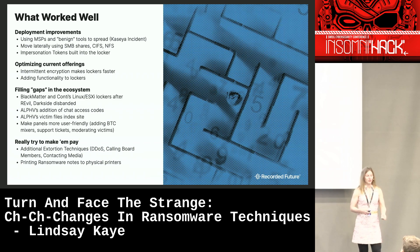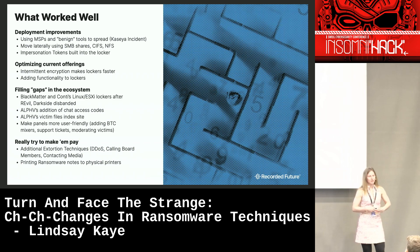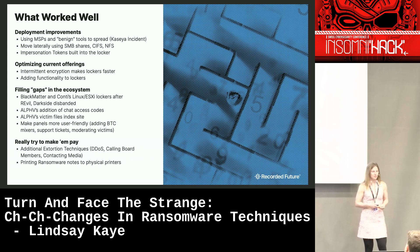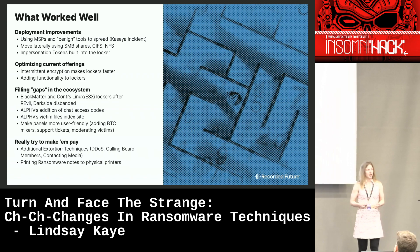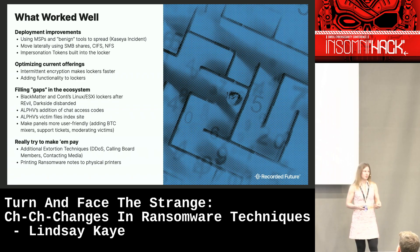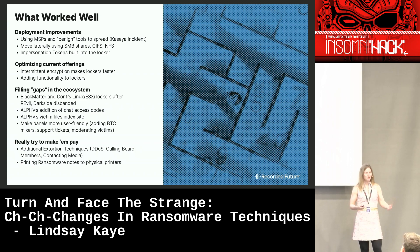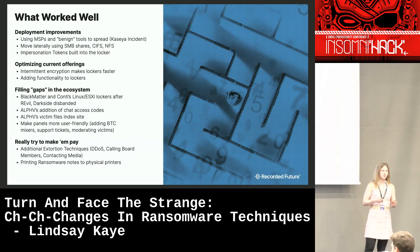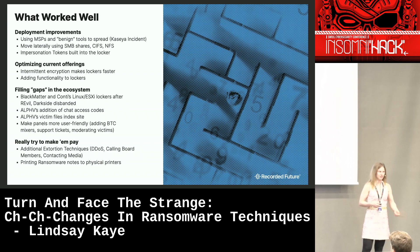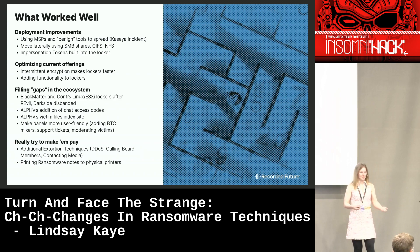Some of these worked particularly well. Looking at how people deploy their lockers — one thing we started seeing is the use of MSPs and other benign tools to spread them. Rather than using a custom set of tools, you now have stuff that should legitimately be on computers within the organization, which is harder to detect than something known to be malicious. Additionally, we've seen more lateral movement using things like SMB shares, CIFS, and NFS — effectively using the way computers operate against them.